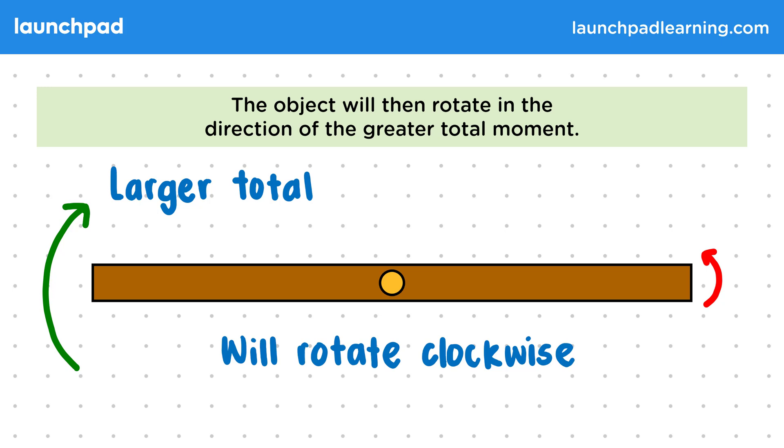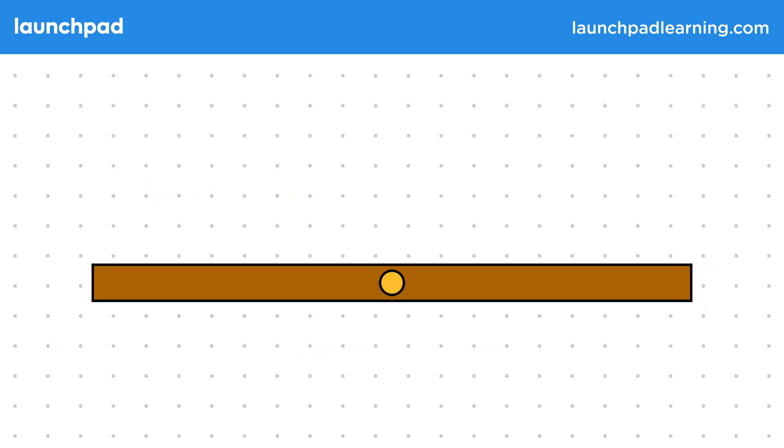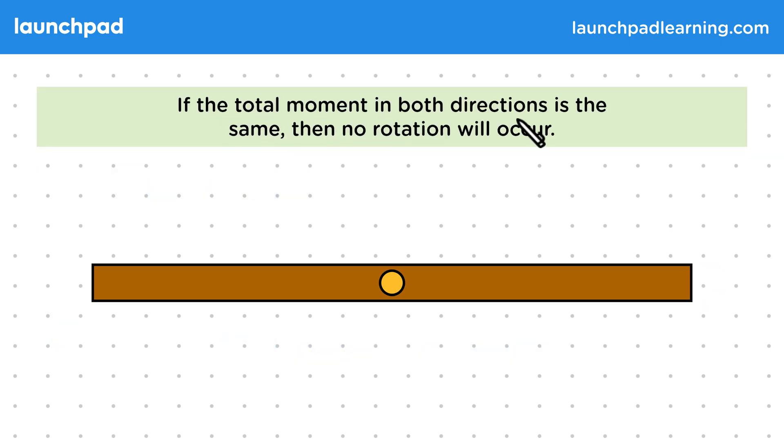For your exams, you could be asked to explain what direction something will rotate when multiple forces are applied to it, but also what will happen when the total moment in both directions is the same. If the total moment in both directions is the same, then no rotation will occur. Again, this is similar to what happens when forces in equal and opposite directions cancel each other out.